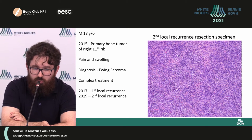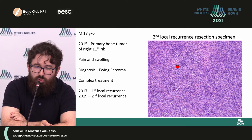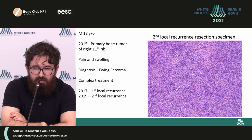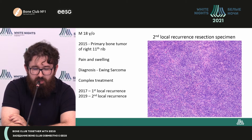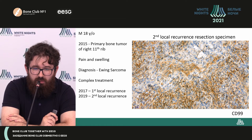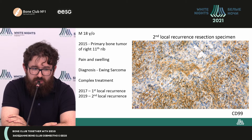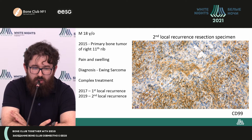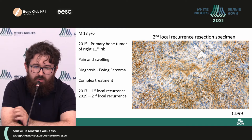We see the resection samples of the second relapse, where you can see a spindle cell predominantly tumor with completely differently directed clusters or bundles of cells with moderate polymorphism. In this situation, almost nothing reminds us of classical round cell tumors.